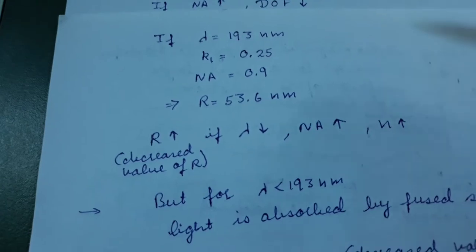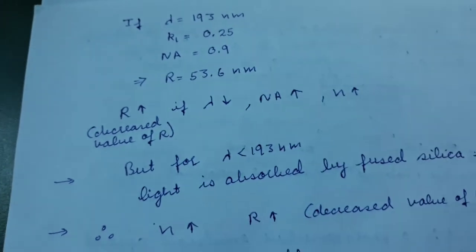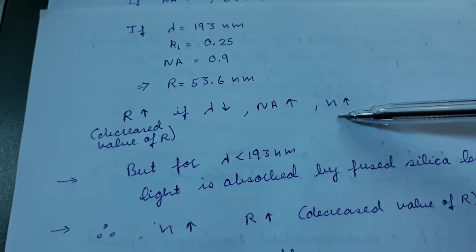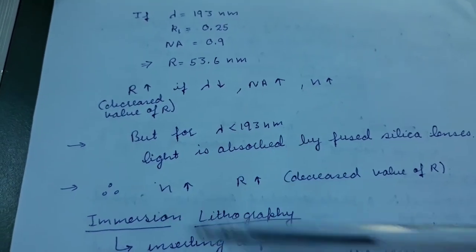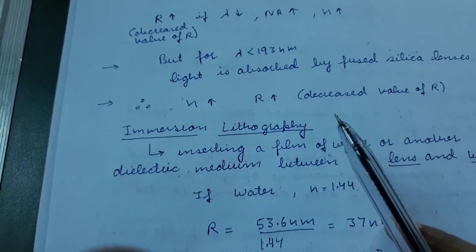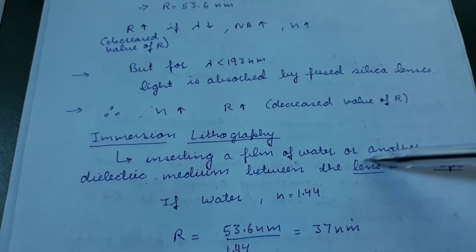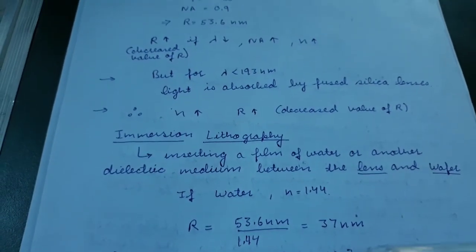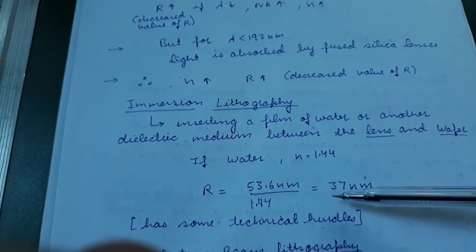Using a wavelength of around 193 nanometers, the resolution is around 53.6 nanometers. To increase resolution — meaning decrease the value of R — we can decrease the wavelength, increase numerical aperture, or increase refractive index. We can't go below 193 nanometers in wavelength because shorter wavelengths would be absorbed by the silica glass lenses. If we increase the refractive index by inserting a film of water between the lens and the wafer, the resolution decreases by a factor of the refractive index to around 37 nanometers.